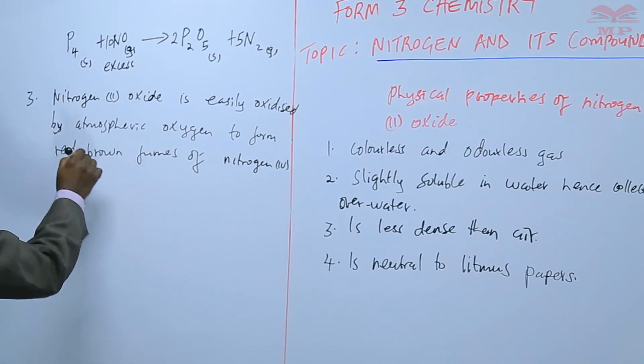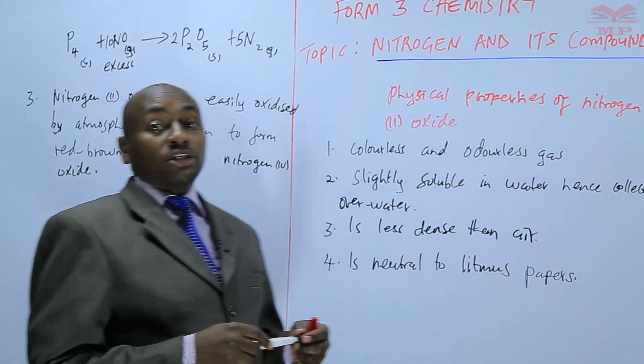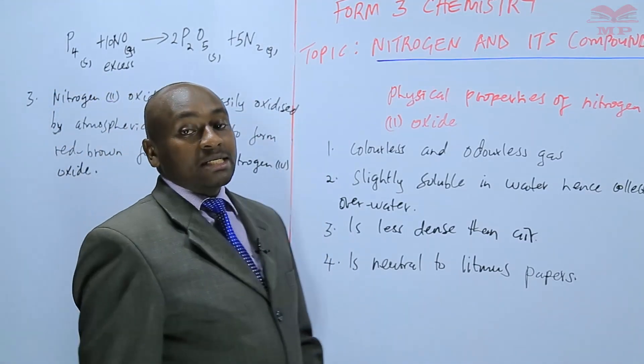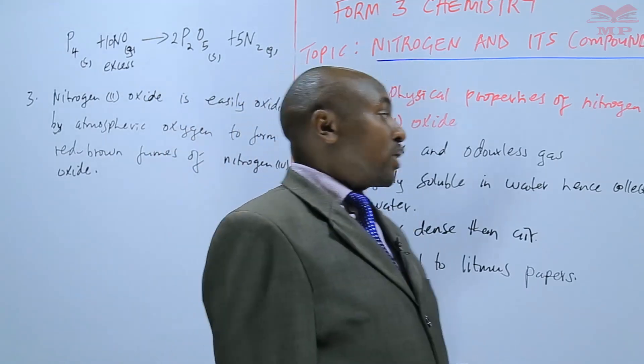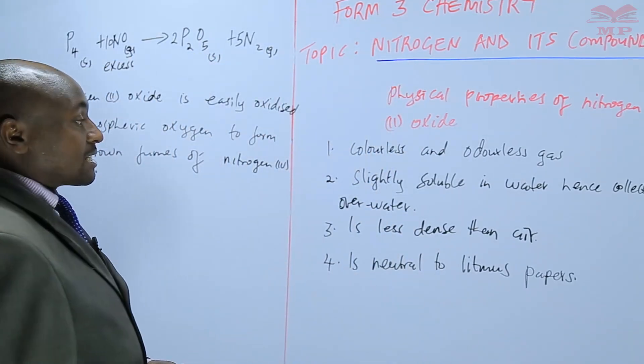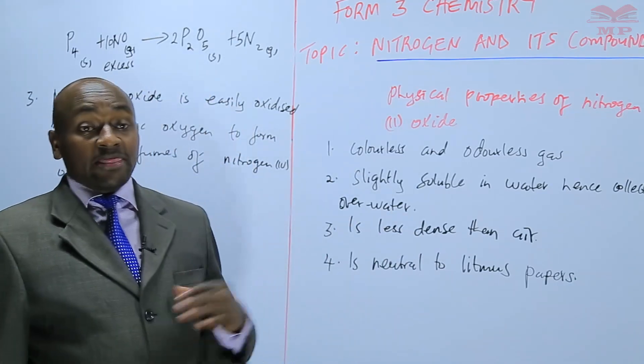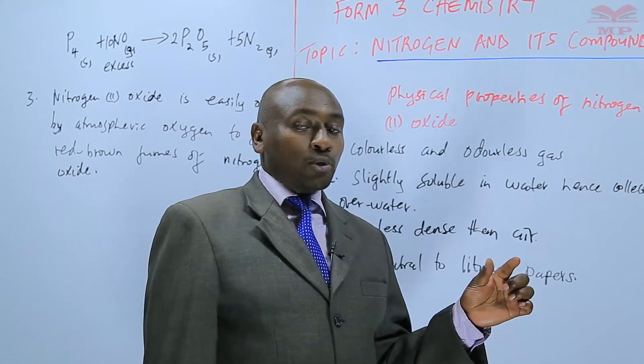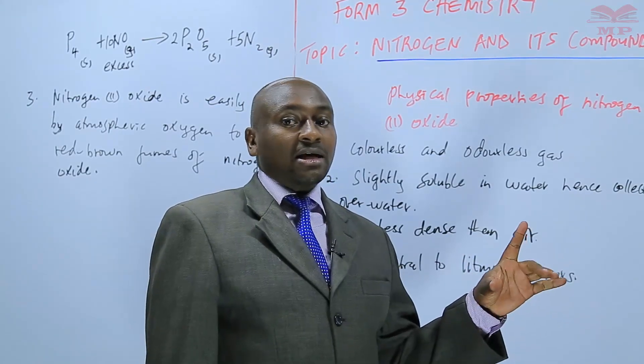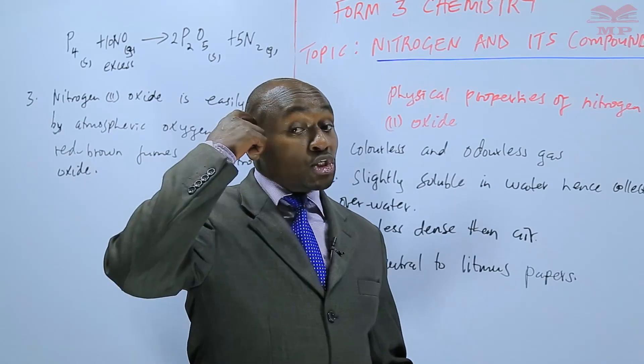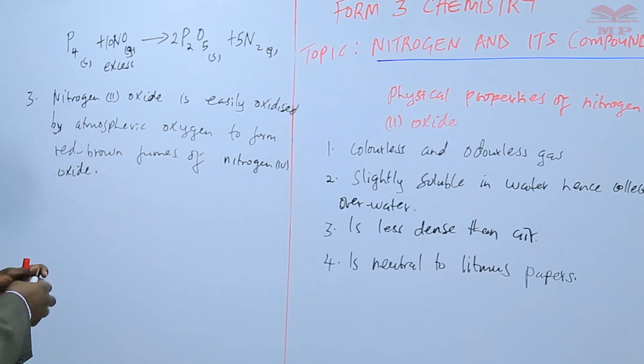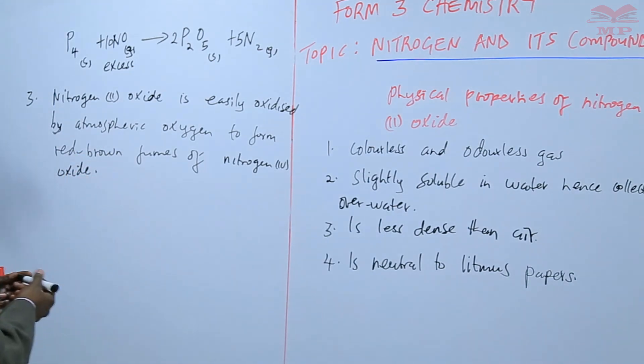Basically, when you are preparing nitrogen 2 oxide, we don't collect the first gas jar because already it's contaminated with nitrogen 4 oxide. Nitrogen 2 oxide is easily oxidized to nitrogen 4 oxide. The moment you expose it to the air, it's a colorless gas, but once exposed to air, it turns red brown because of the formation of nitrogen 4 oxide, as we can see from the equation.